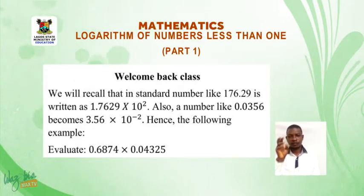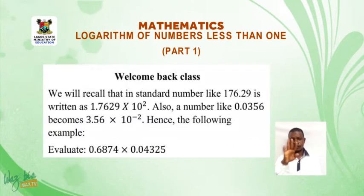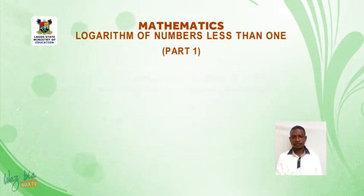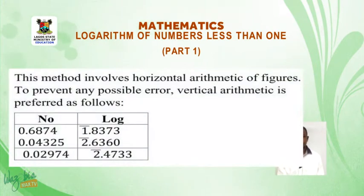Evaluate 0.6874 times 0.04325. Solution: 0.6874 times 10 raised to power minus 1, all in bracket, times 4.325 times 10 raised to power minus 2, all in bracket.